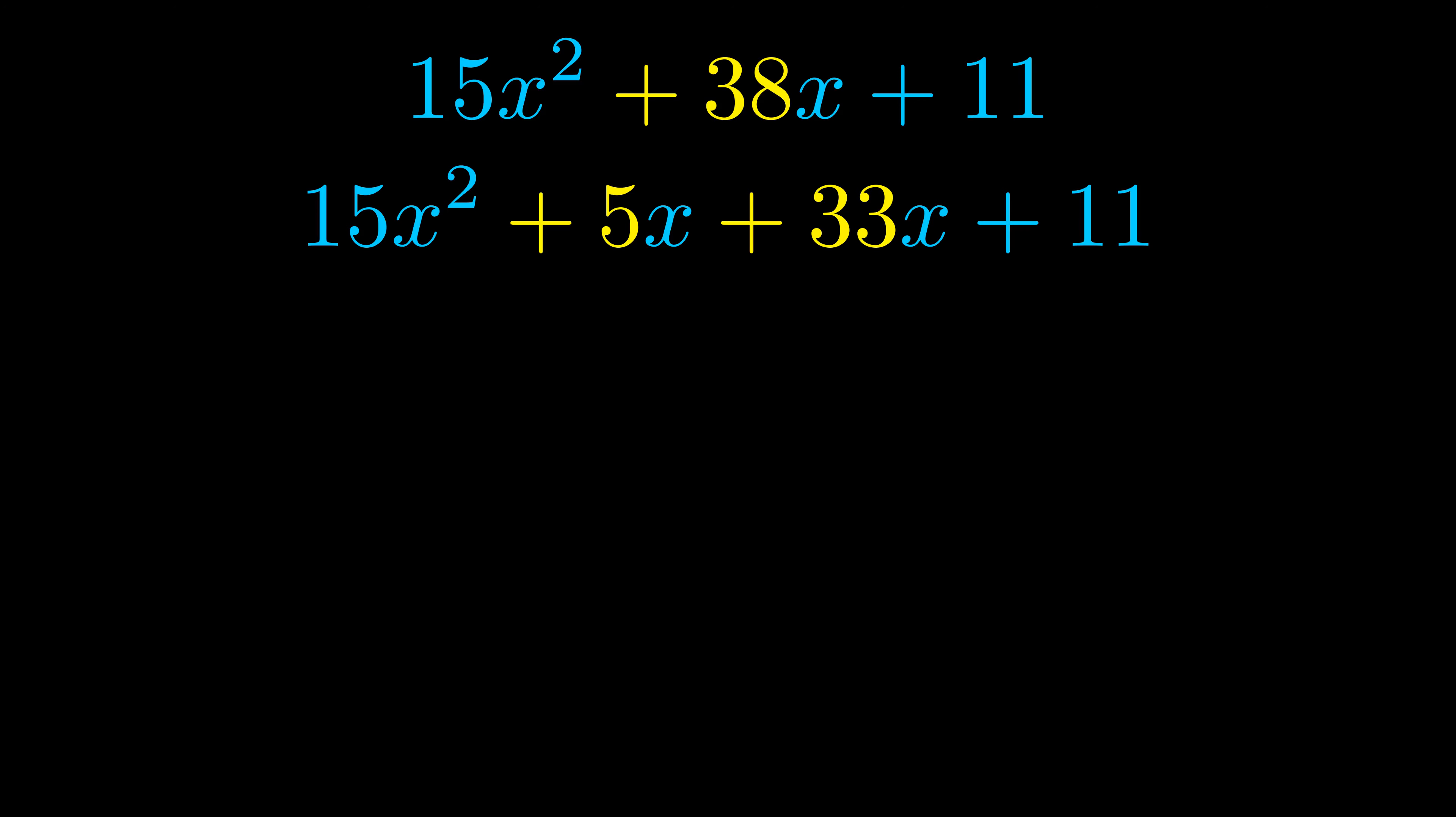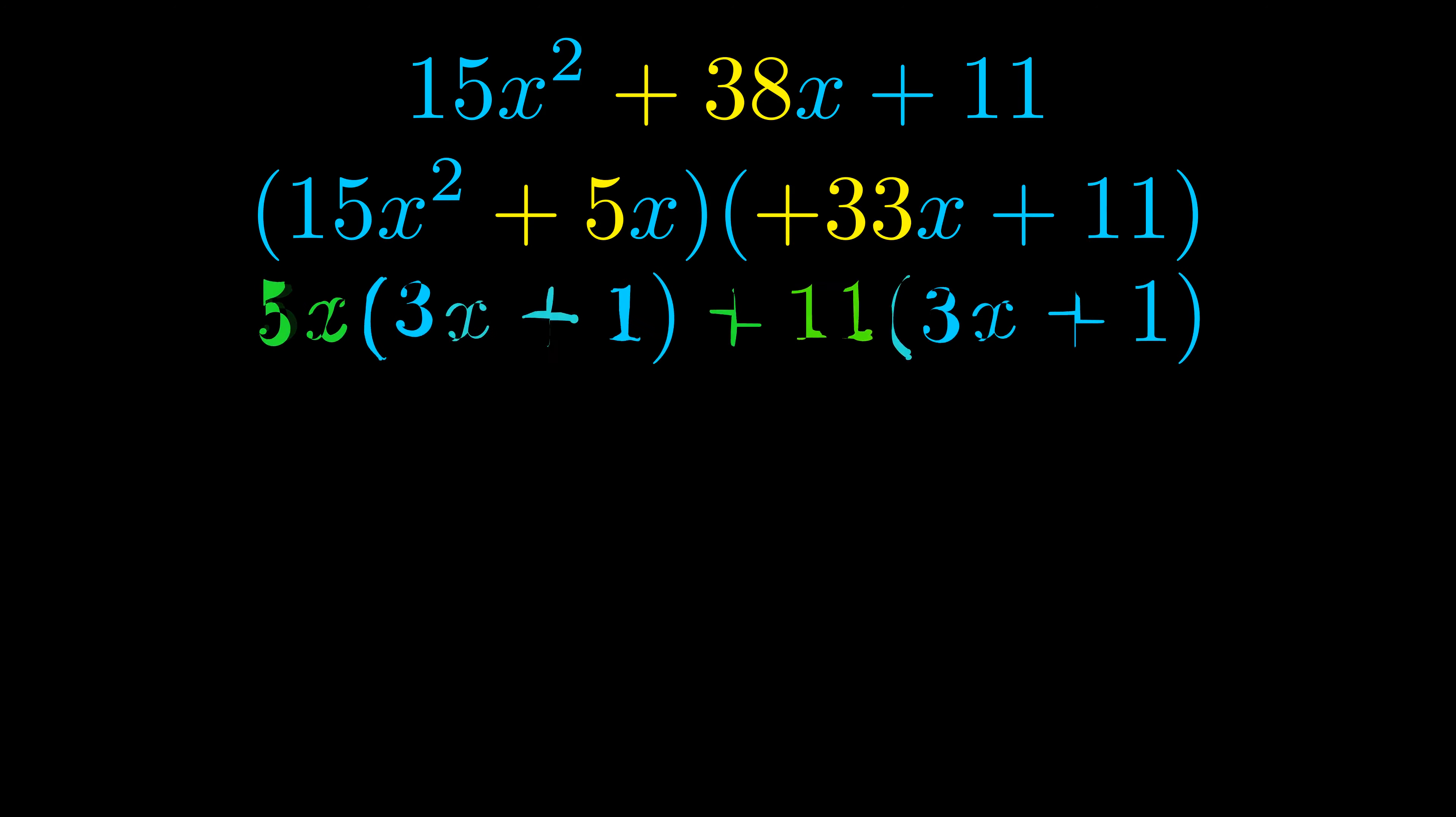Once we've done this we go ahead and we put parentheses around the first term and the last term and we do that so that we can take the greatest common factor out of both terms. We can see the greatest common factor is now outside in green.